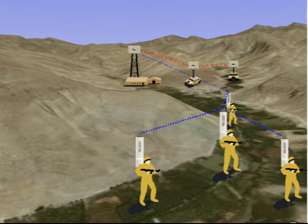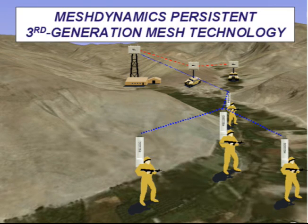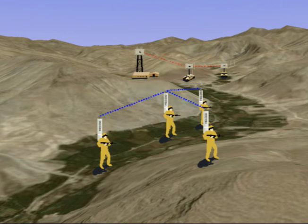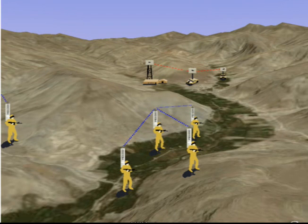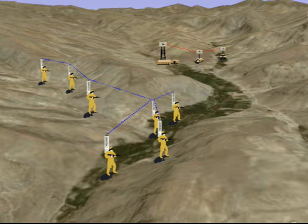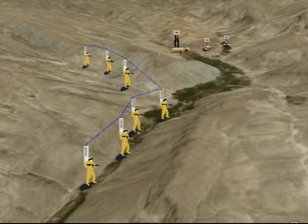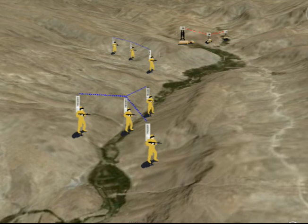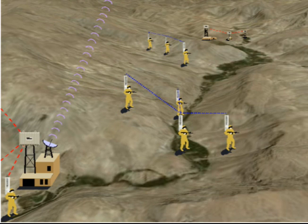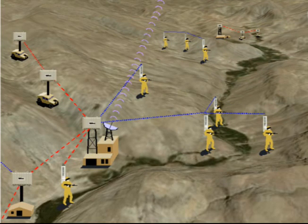Last but certainly not least is the implementation of MeshDynamics' persistent third-generation mesh technology onto the MD-1000s. Groups of persons or vehicles can separate from the main network and still maintain connectivity within their own subnetwork. Should the subnetwork come in range of another subnetwork, the two will merge, forming a larger subnetwork. As the MD-1000s continue to move, the subnetwork will split, again forming two smaller subnetworks. When any subnetwork of MD-1000s comes in range of a standard MeshDynamics mesh network, it will associate and become part of the mesh network.